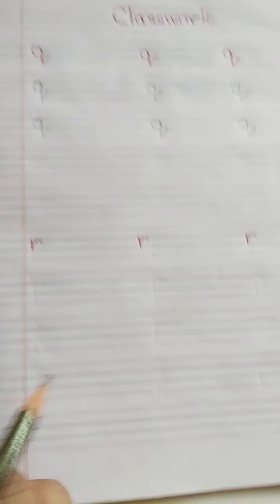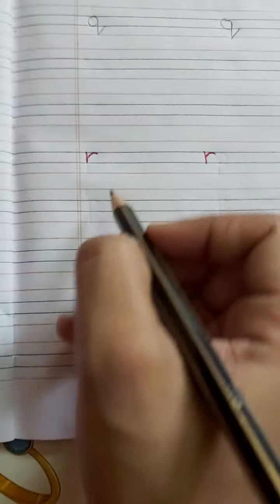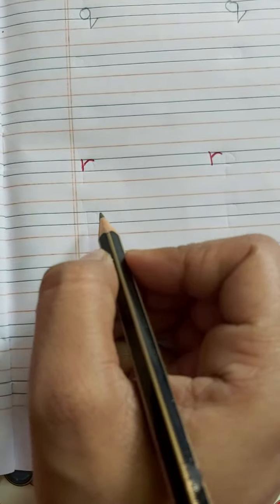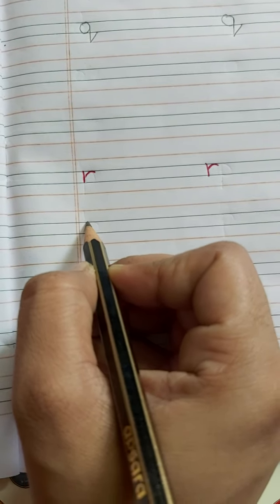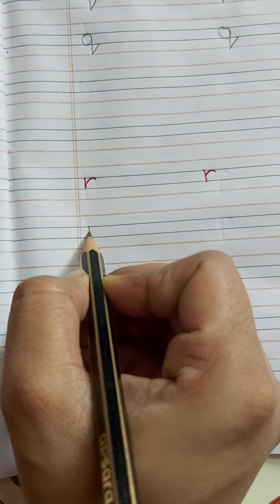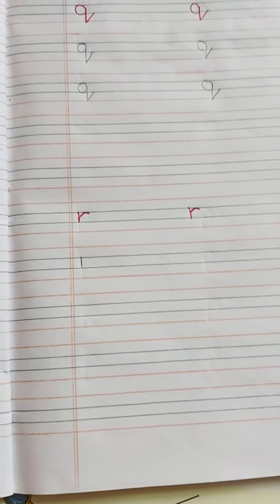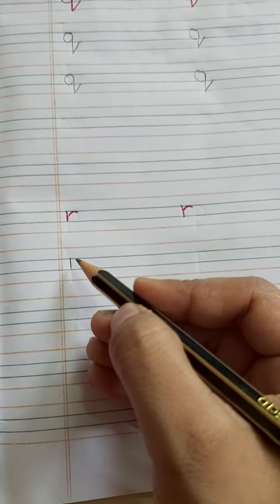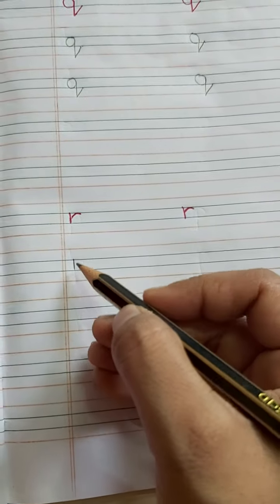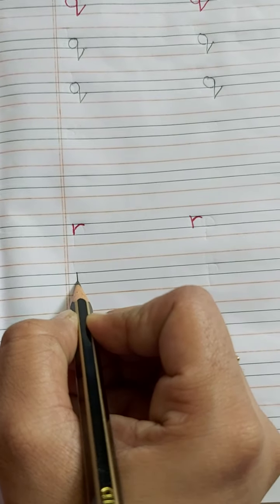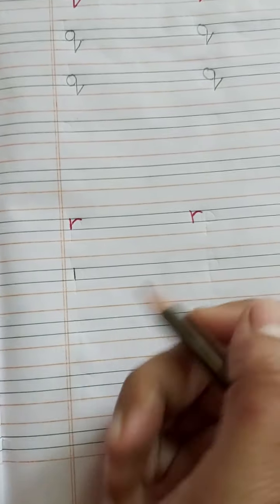Now let's see how you are going to write letter R. First of all, place your pencil on the black line. You will make a standing line between the black lines.